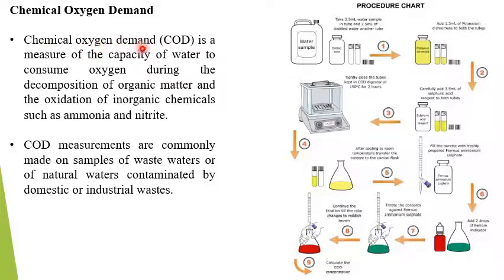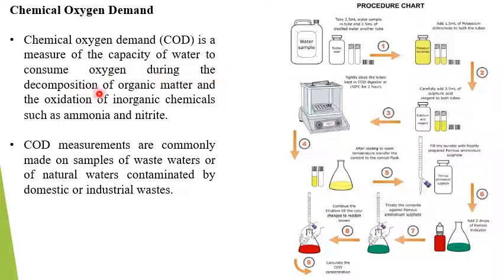Chemical Oxygen Demand — COD — where C denotes chemical, O denotes oxygen, and D denotes demand. COD is a measure of the capacity of water to consume oxygen during the decomposition of organic matter and the oxidation of inorganic chemicals such as ammonia and nitrate. In another term, oxygen consumed per unit time by organic matter is known as COD.